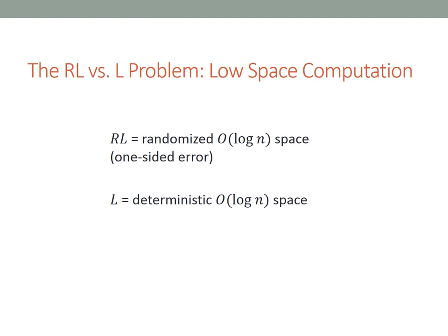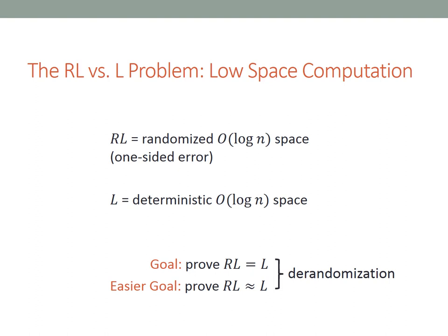RL is the set of things that you can compute in logarithmic space when you have access to randomness and are allowed one-sided error. L is the set of things that you can compute in logarithmic space when you're not allowed any randomness. A long-standing goal in complexity theory is to prove that RL equals L, meaning anything computable in randomized log space is also computable in deterministic log space. This process of turning a randomized algorithm into a deterministic one is called derandomization.